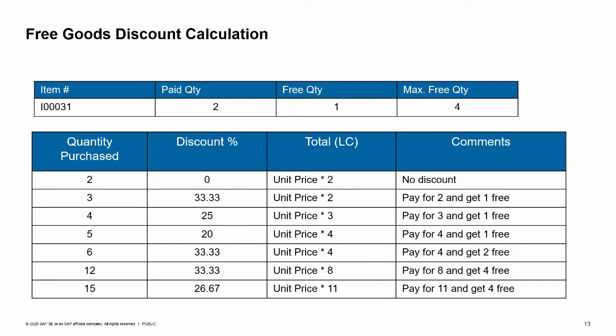Let us explore how the discount is actually calculated. In the example shown, the discount group is set up with a paid quantity of two, a free quantity of one, and a maximum of four free items. If the customer purchases a quantity of two, no discount is applied. If they purchase three, the discount is 33.33% — the customer buys three but gets one of the three for free. If the customer purchases four items, they only get the discount based on a quantity of three, so the discount percentage is reduced from a third to a quarter. If the customer purchases six items, the discount is 33.33% — they pay for four and get two for free. The customer essentially gets one free item with every three purchased, up to the maximum limit of four free items. If the customer purchases 12 items (four × three), they will get the maximum number of free goods.